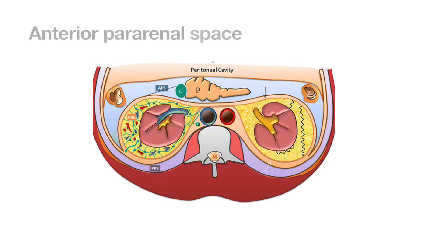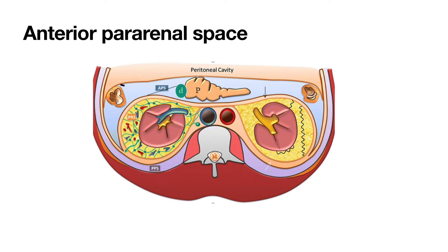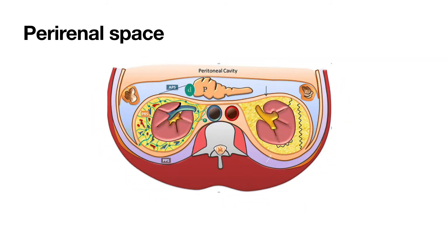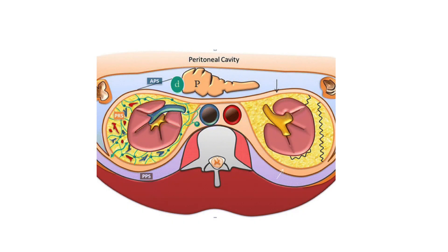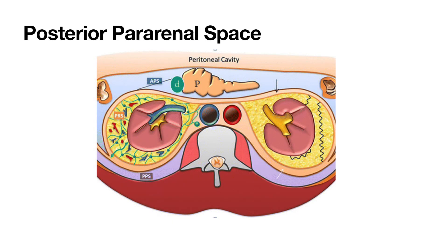The anterior pararenal space contains retroperitoneal organs like the ascending colon, the descending colon, pancreas, and the retroperitoneal portion of the duodenum. The perirenal space contains both kidneys along with adrenal glands, with renal artery, vein, and renal pelvis, along with the inferior vena cava and aorta. The posterior pararenal space contains fat, muscles like quadratus lumborum and psoas, along with the spine.